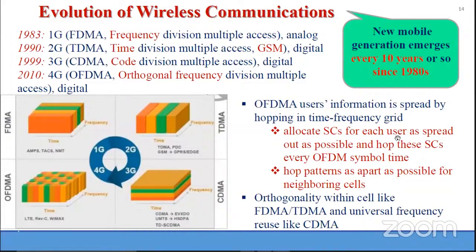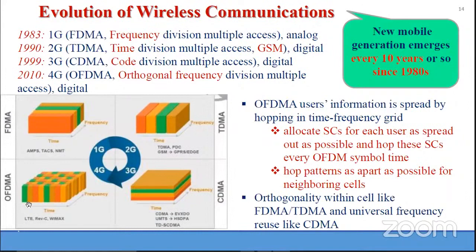Allocation of sub-carriers for each user is spread out as possible. Every OFDM symbol, these sub-carriers change. Hop patterns are as far apart as possible for neighboring cells — this is how orthogonality is maintained within the cell, like FDMA and TDMA. Universal frequency reuse is also present, like CDMA, in OFDMA. So this is 4G.